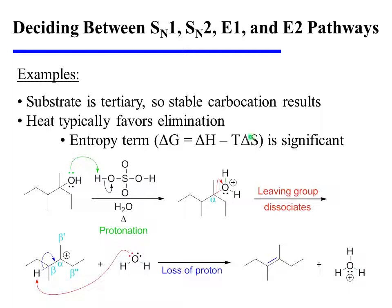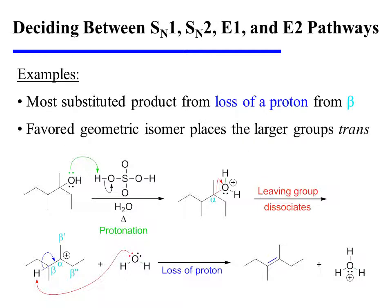Heat typically favors elimination. The reason is that during elimination there is an increase in entropy as the substrate fragments, and at higher temperatures this entropy term becomes significant. Having therefore decided on an E1 pathway, we know that the most highly substituted product will predominate, and that results from the loss of a proton from the most highly substituted beta position. Furthermore, the favored geometric isomer places the larger ethyl groups trans to one another. However, minor products can be expected, including the alkene with the cis orientation of the ethyl groups, as well as alkenes that are less highly substituted resulting from loss of a proton from beta prime and beta double prime.